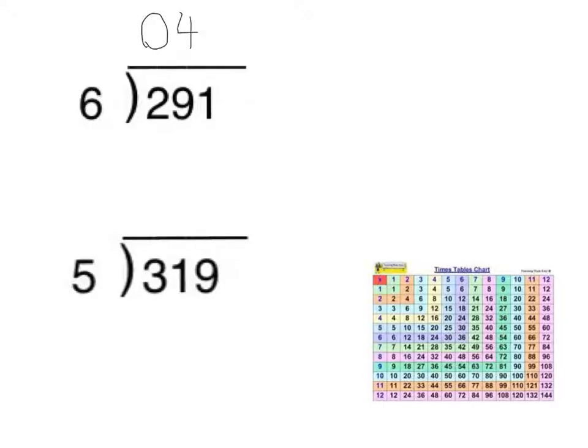And because 6 times 4 is 24, there's 5 between 29 and 24. So that means that I need to carry that 5. And I actually put that 5 down near that 1.